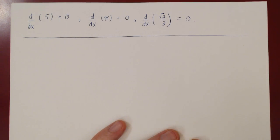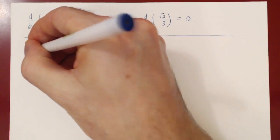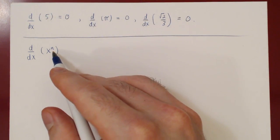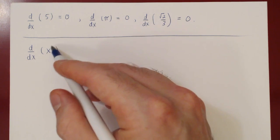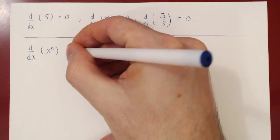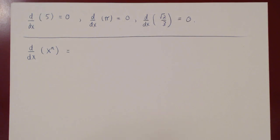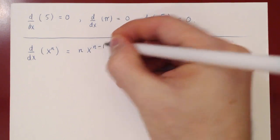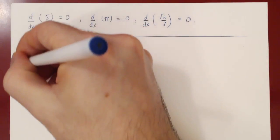Then we have a really nice rule called the power rule. The question is: if you differentiate a power of x, how does it work? Here n is a fixed number, and we ask: if the function is f of x equals x to the n, what is the derivative with respect to x of x to the n? We'll find the derivative of x squared to be 2x, the derivative of x cubed to be 3x squared — so every time it looks like we bring the power down, times x to the power minus 1. That is the so-called power rule.